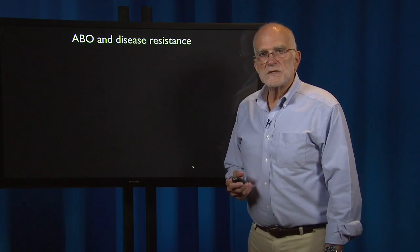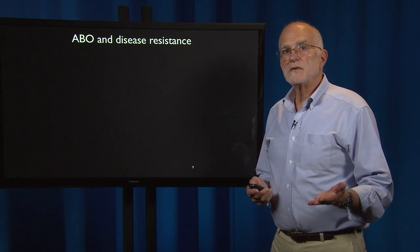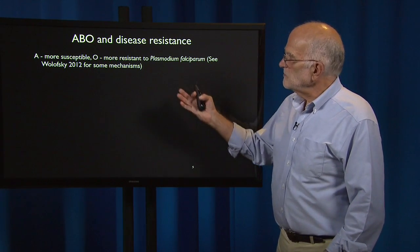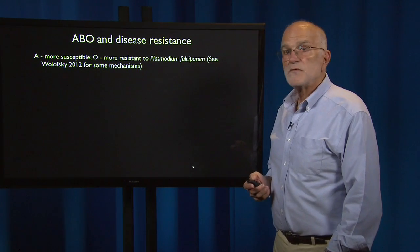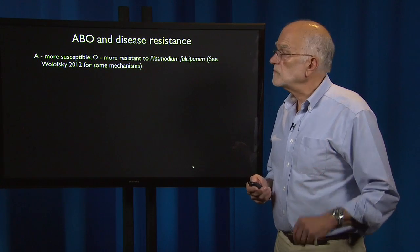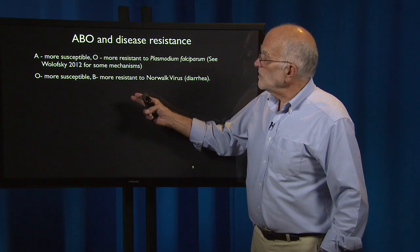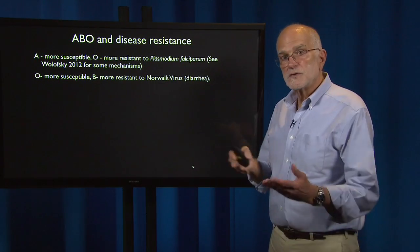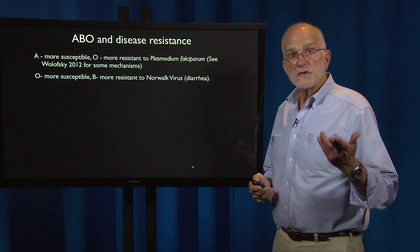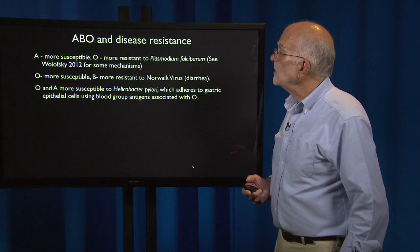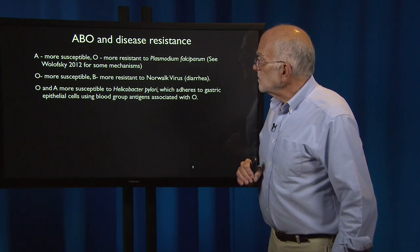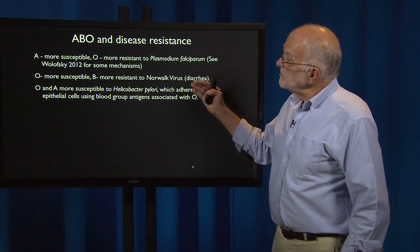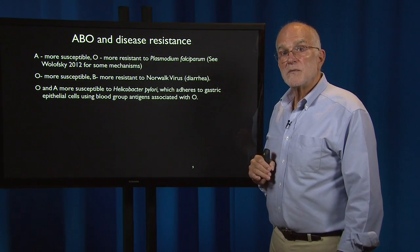One of the genetic systems implicated in disease resistance is the ABO blood group system. People who are blood type A are more susceptible, and people who are blood type O are more resistant to Plasmodium falciparum, the pathogen that causes the nastier type of malaria. On the other hand, people with blood type O are more susceptible, and people with blood type B are more resistant to Norwalk virus. So there is a trade-off among these genetic variants — the one that's good for resisting one disease is not good for resisting another. O and A are both more susceptible to Helicobacter pylori, which adheres to gastric epithelial cells using blood group antigens associated with O, making people with type O more susceptible to stomach ulcers and gastric cancer.